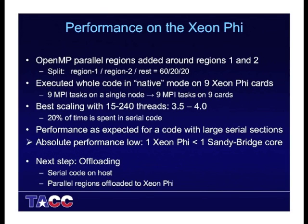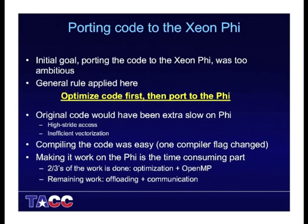We have to move on to offloading — leave the serial code on the host and move the parallel regions onto the Phi by means of offloading. The initial goal set out a year ago before Stampede came online was actually too ambitious, because the general rule applied here: optimize the code first on your host architecture and then port to the Phi. If you would execute the original code on the Phi, it would have been extra slow, because all the high-stride memory accesses and insufficient vectorization that you can get away with on the host, you cannot get away with on the Phi. Compiling for the Phi was easy — just one changed compiler flag — but making it work is the time-consuming part. Two-thirds of the work is already done: the optimization and the OpenMP. The remaining work is offloading and communication. In the next proposal we will ask for a follow-up ECSS to finish this.